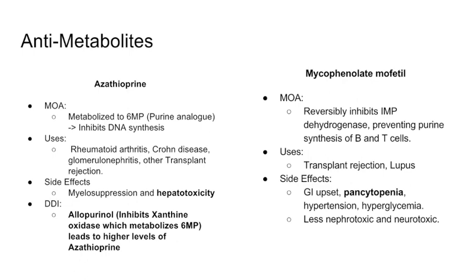Another commonly used drug in transplant rejection is mycophenolate. It inhibits IMP dehydrogenase, part of the purine synthesis pathway. By inhibiting purine synthesis in rapidly dividing B and T cells, it leads to inhibition of DNA synthesis and B and T cell levels drop. It's used chronically for transplant and can also be used for lupus. Side effects include pancytopenia, GI upset, hypertension, and hyperglycemia. It tends to be less nephrotoxic and neurotoxic than the agents discussed previously.